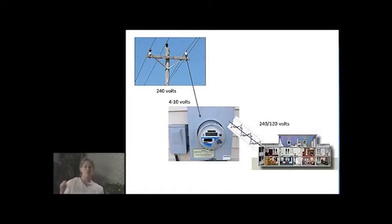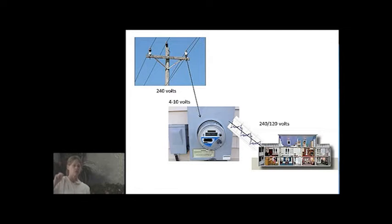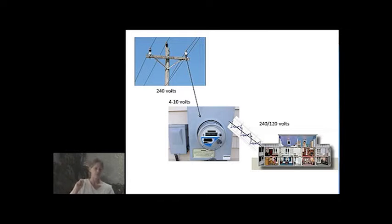Let's talk about dirty electricity. In order to run the smart meter or any other digital meter, the 240 volts coming down from the power line has to be stepped down to 4 to 10 volts to run the digital components of the meter. You don't have to do this with an analog meter — an analog meter runs passively. This stepping down is what generates what's called dirty electricity.